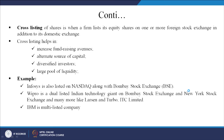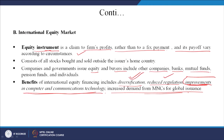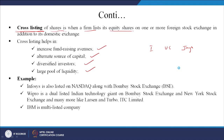An important term in the equity market is the cross-listing of shares, where a firm lists its equity shares on one or more foreign stock exchanges. For example, Infosys stock is listed in India, the US, and Japan. Cross-listing helps in increasing fund avenues, alternate sources of capital, diversified investors, and a large pool of liquidity. Infosys is also listed on NASDAQ along with the Bombay Stock Exchange and NSE. Wipro is a dual-listed Indian technology giant on BSE and the New York Stock Exchange, along with many others like L&T and ITC.